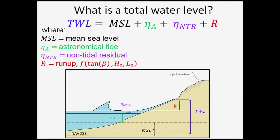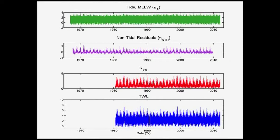Wave run-up is a function of the beach slope, the deep water wave height, and the deep water wavelength. You can stack all of these components on top of each other to get a vertical estimate of our water levels. Moving away from the schematic to look at what a time series actually looks like from recorded measurement data off the coast of Oregon, we have our tide time series and our non-tidal residuals.